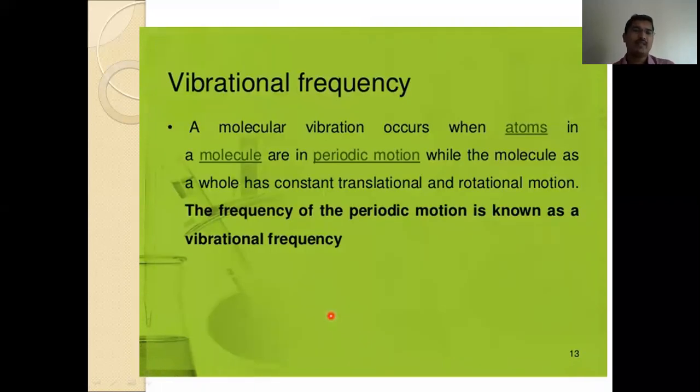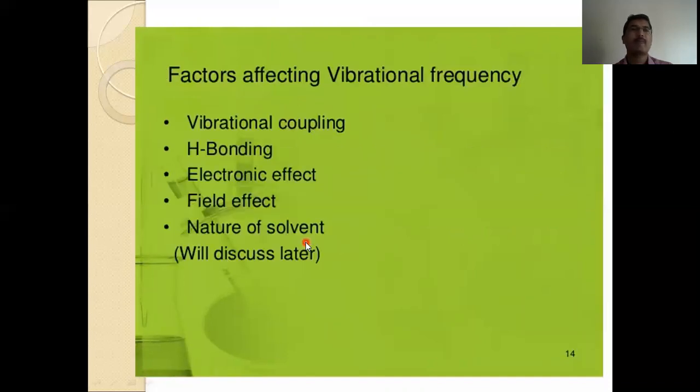Vibrational frequency. A molecular vibration occurs when atoms in a molecule are in periodic motion. While the molecule as a whole has constant translational and rotational motions, the frequency of the periodic motions is known as the vibrational frequency. Now we can see the factors affecting the vibrational frequency. Which factors are affected particularly in this vibrational frequency we will see step by step. Vibrational coupling, hydrogen bonding, electronic effect, field effect, nature of the solvent. We will discuss later.